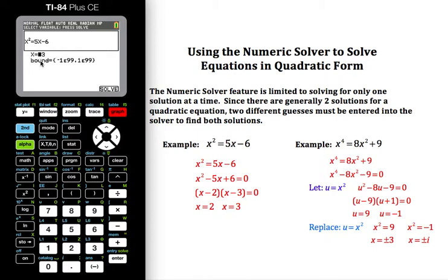Now at this point, it's wanting you to guess at what the solution is. So I have already over here in this example worked it out by factoring, and I know my two solutions are 2 and 3. If I don't know that ahead of time, I might just start randomly guessing numbers. If I guess, say, an 8, and then I hit solve...